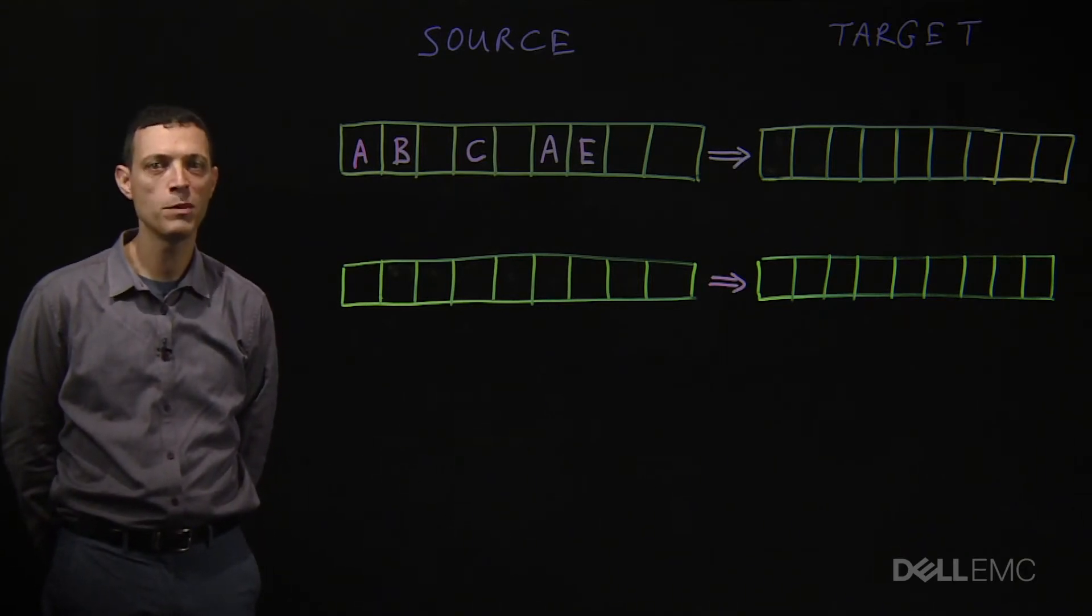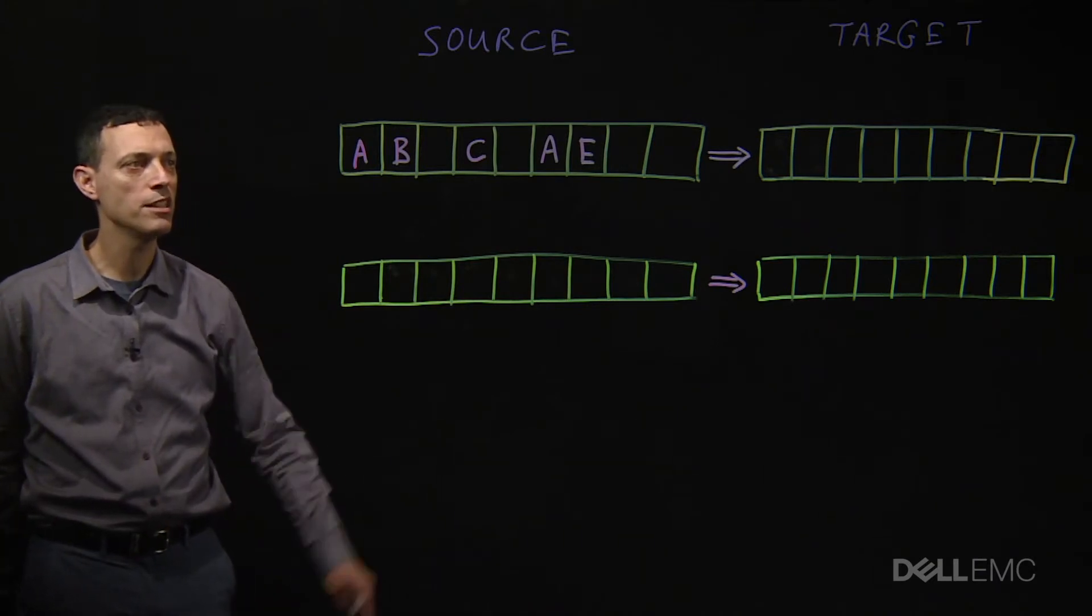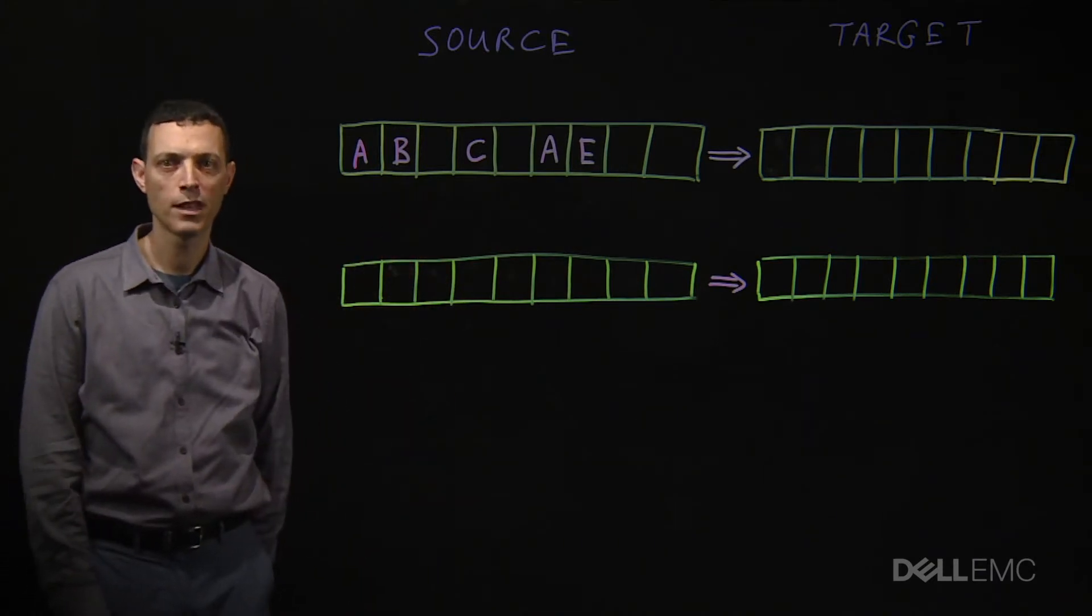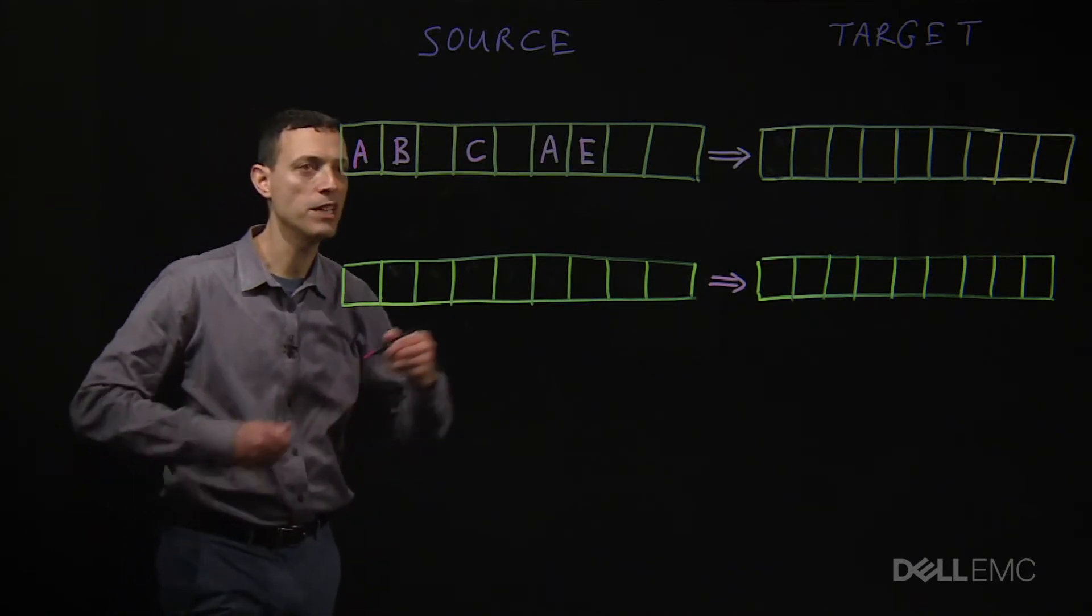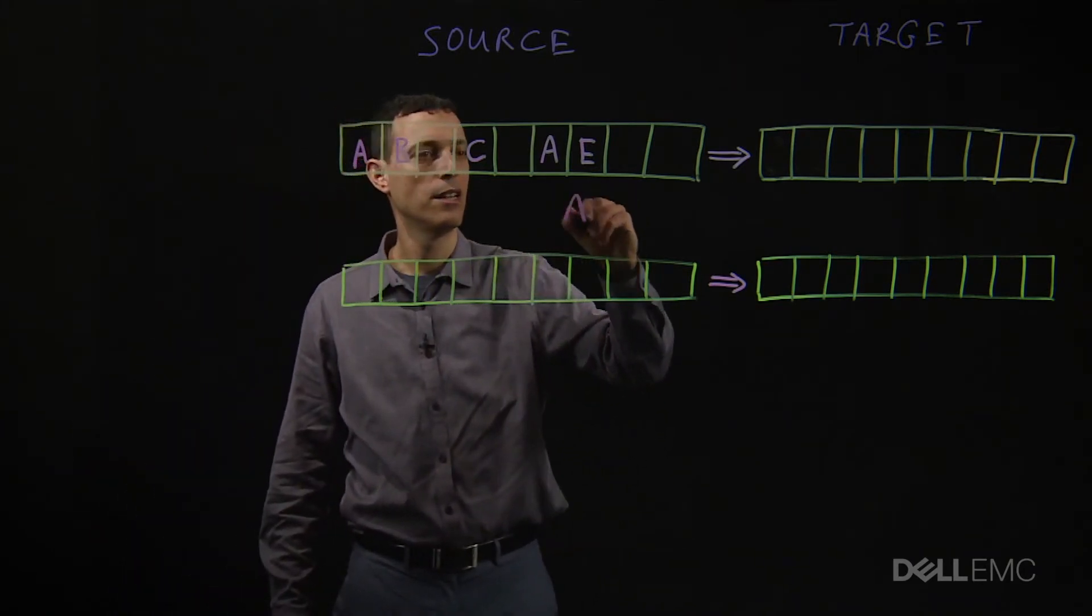In this example, we have five blocks to transmit: A, B, C, A, and E. So over the wire, we compress and transmit A, B, C.